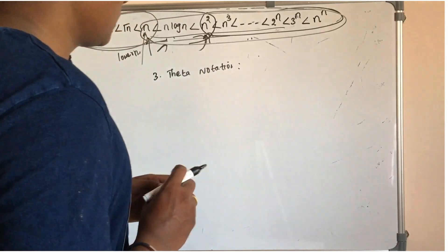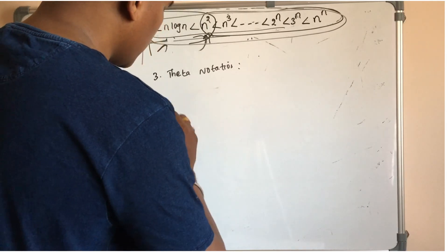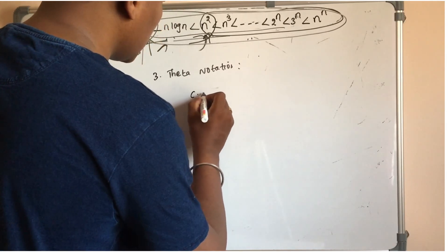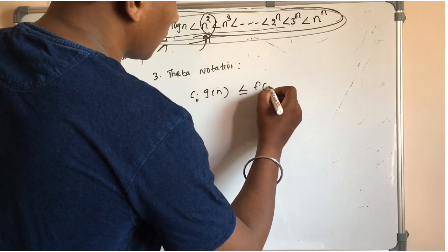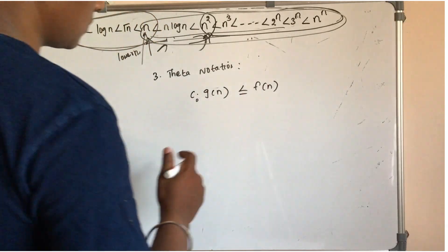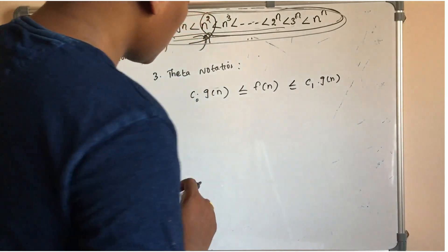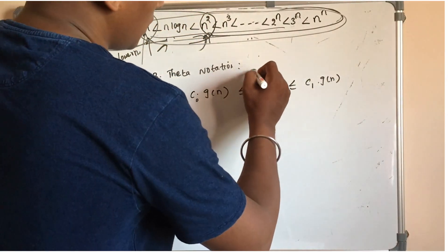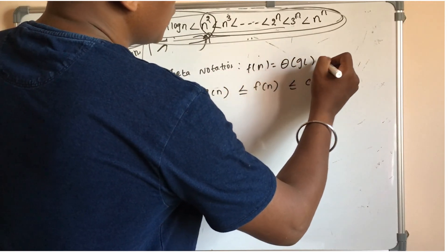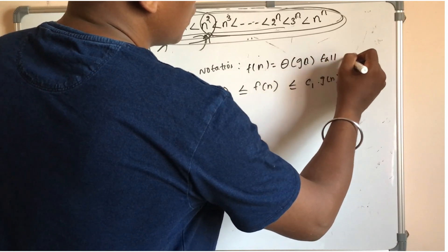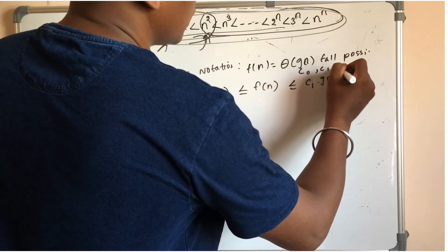If you apply to theta notation, the condition is: c₀ into g(n) less than or equal to f(n) less than or equal to c₁ into g(n). So f(n) equals theta of g(n) for all positive constants c₀, c₁, and n₀.